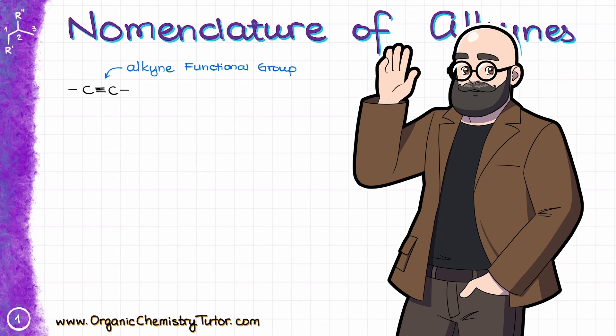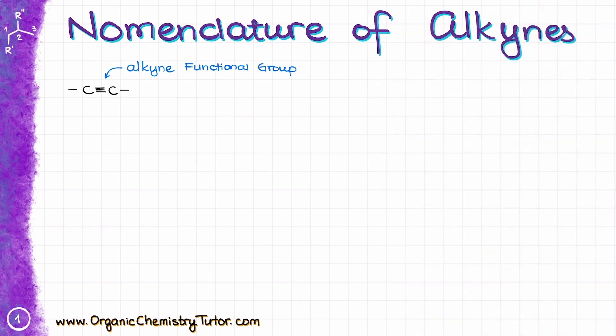Hey everyone, Victor is here, your organic chemistry tutor, and today I want to talk about the nomenclature of alkynes. Alkynes are unsaturated hydrocarbons that contain at least one carbon-carbon triple bond, like that.